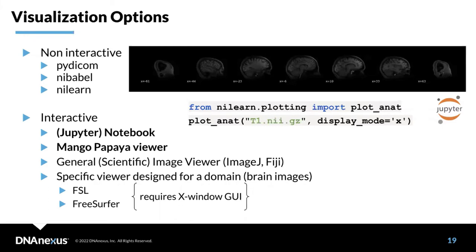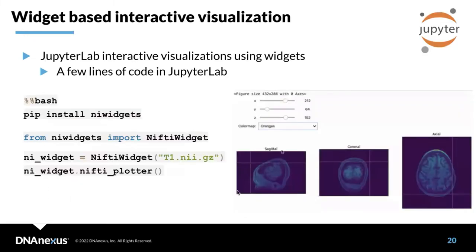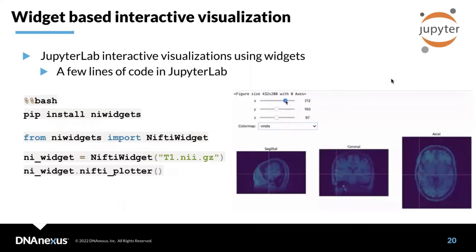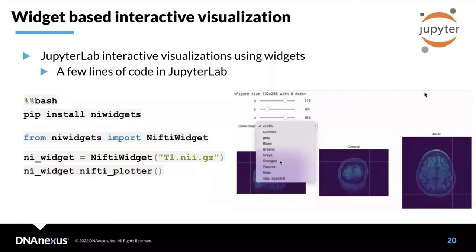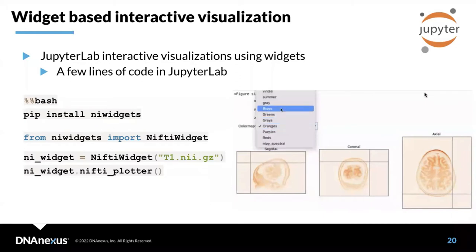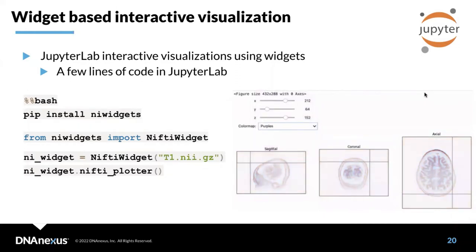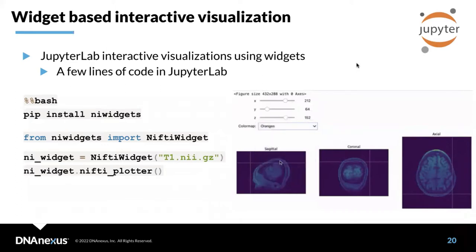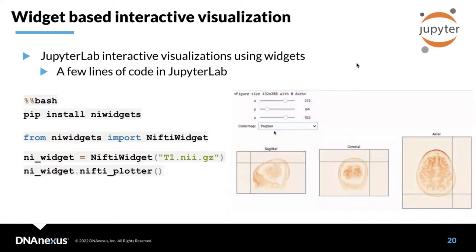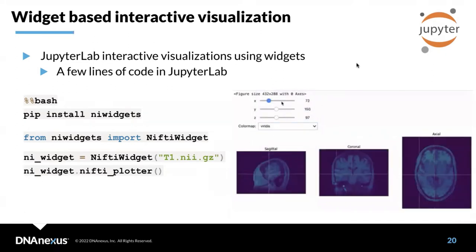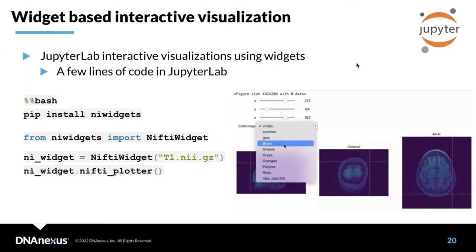One example of interactive visualization is a widget-based solution you can implement in JupyterLab with just a few lines of code — importing a NIfTI widget library and visualizing the data. On the right side of the screen you can see the actual visualization, controllable via sliders. You can also change the color of individual axes — sagittal view, coronal view, and axial view — making it a useful method for quality control of imaging data.